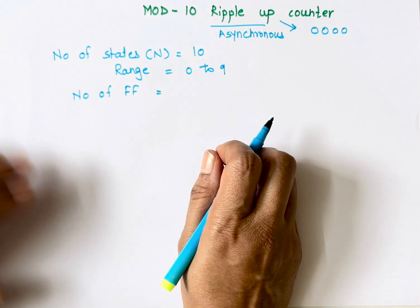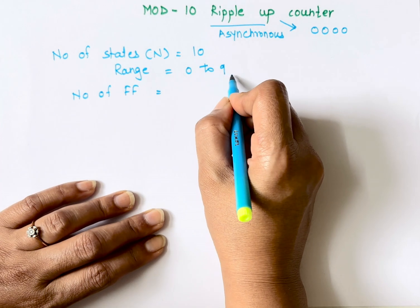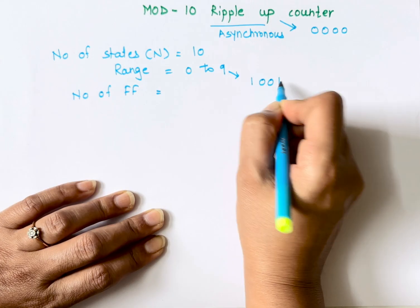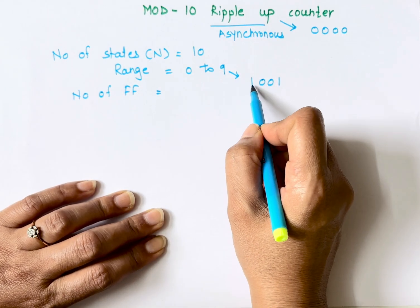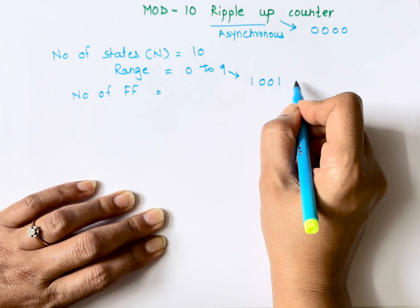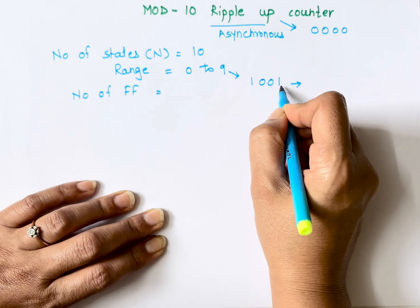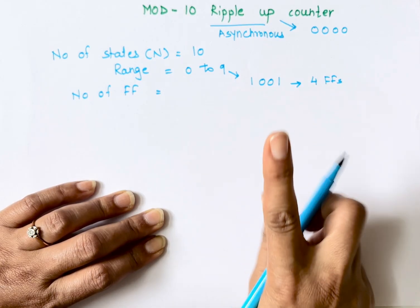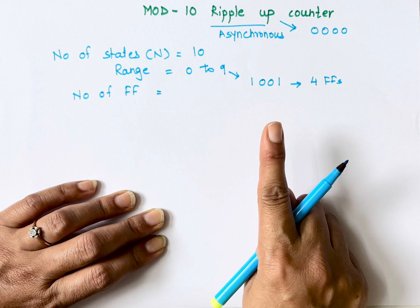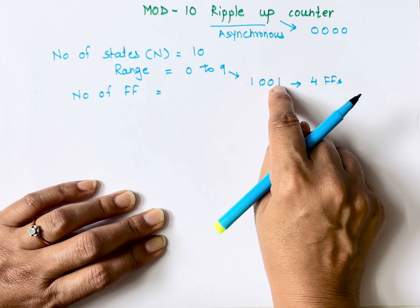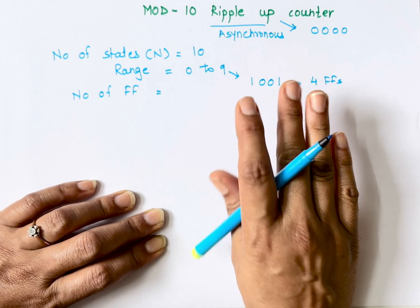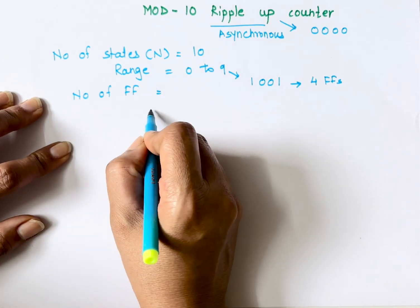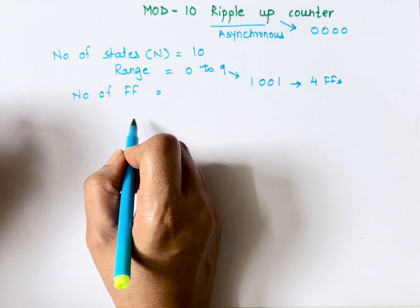There are two methods to identify the number of flip-flops. The first method: write 9 in binary, which is 1 0 0 1 — that's 4 bits. If the number of bits is 4, we need 4 flip-flops, because one flip-flop can only store one bit of data. The second method uses the formula: N (number of states) is less than or equal to 2 raised to the power n.